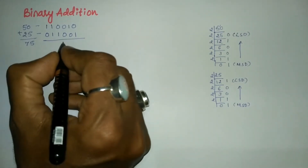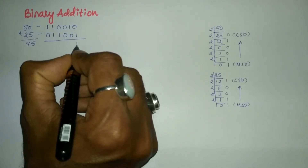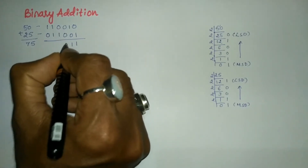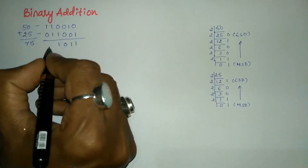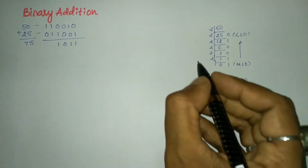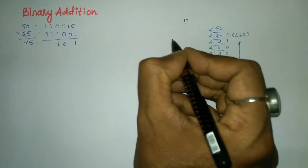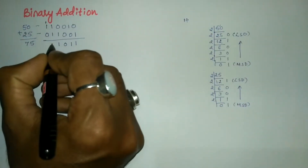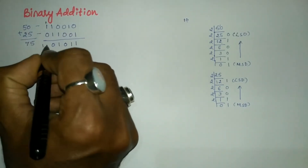Now let us add bit by bit from the right-hand side. 0 plus 1 gives 1; 1 plus 0 is 1; 0 plus 0 is 0; 0 plus 1 is 1; 1 plus 1 equals 2, which in binary is written as 1 0, where 0 is the sum and 1 becomes the carry.